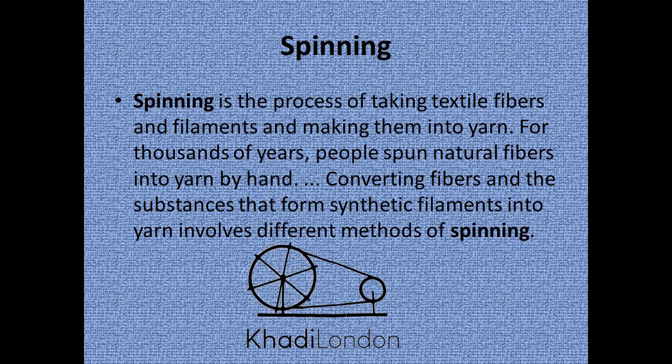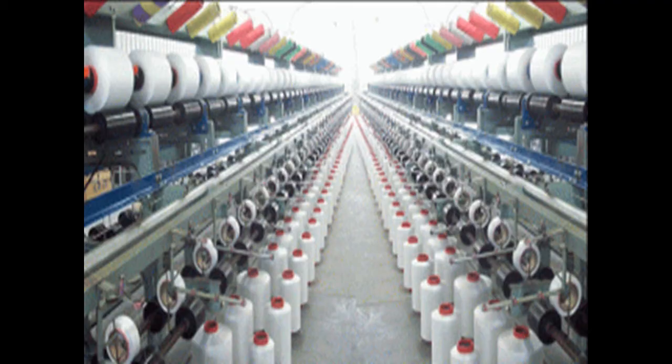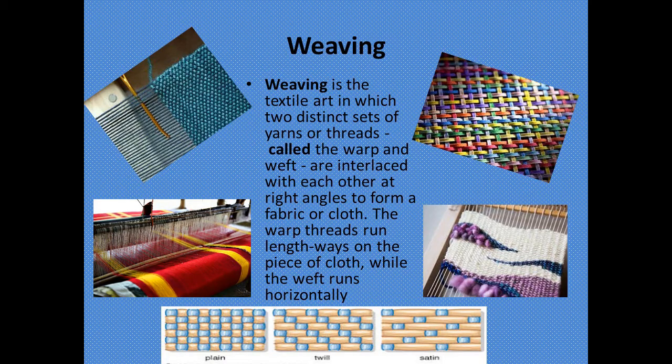Spinning is the process of taking textile fibers and filaments and making them into yarn. For thousands of years people spun natural fibers into yarn by hand. Converting fibers and synthetic filaments into yarn involves different methods of spinning. After spinning, the yarn is taken to factories where it is converted into cloth — that process is known as weaving. Weaving is the textile art in which two distinct sets of yarn called the warp and the weft are interlaced at right angles to form a fabric.